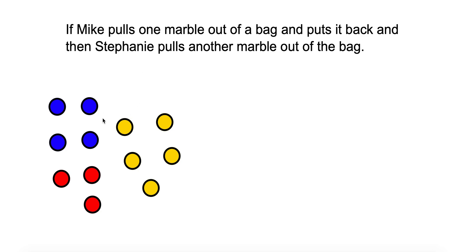Now if Mike pulled the marble out and kept it out, and then Stephanie had to choose from what was left over, there would be one less marble. So that would change the probability for Stephanie. So then it would be a dependent event. It depends on what happens first and if that changes the probability for second.